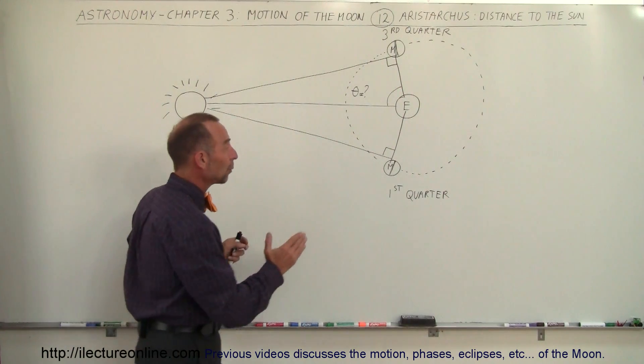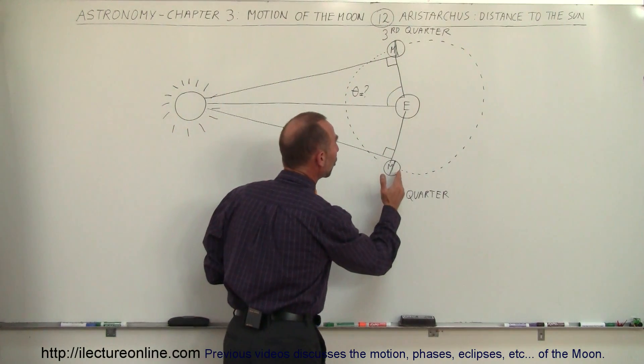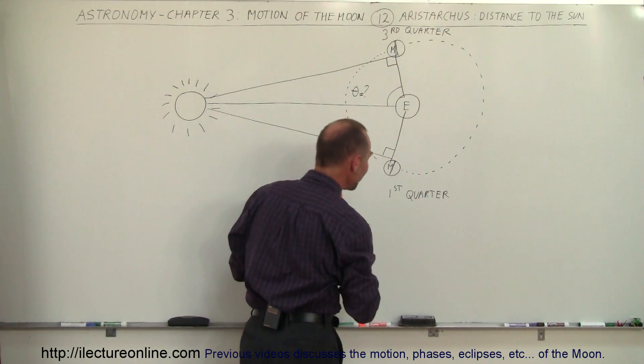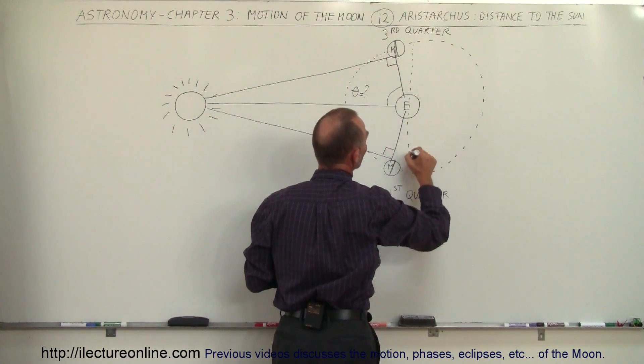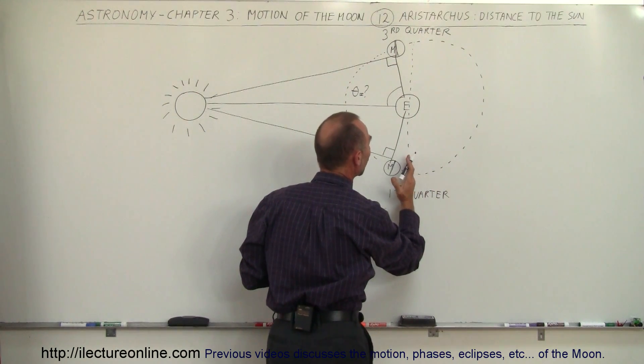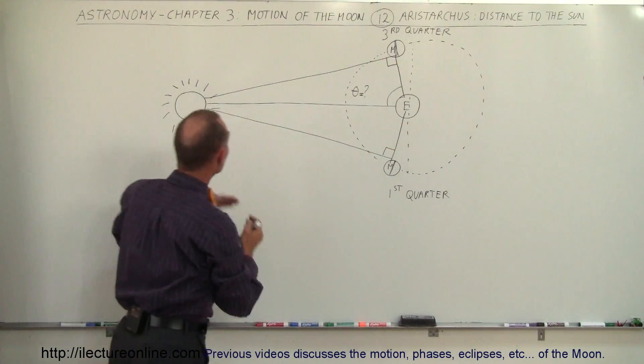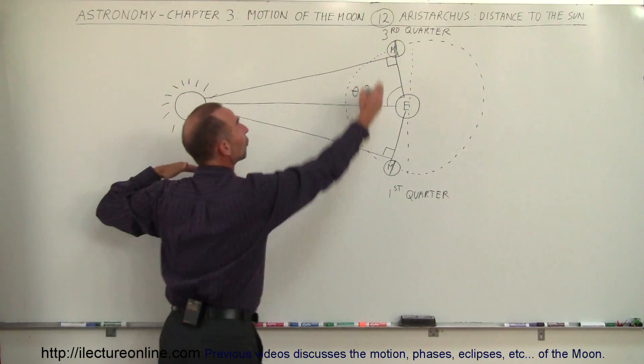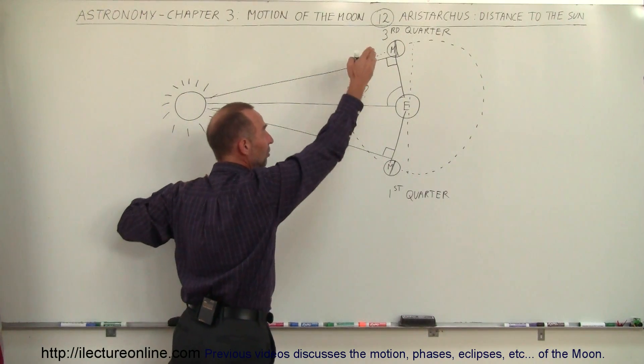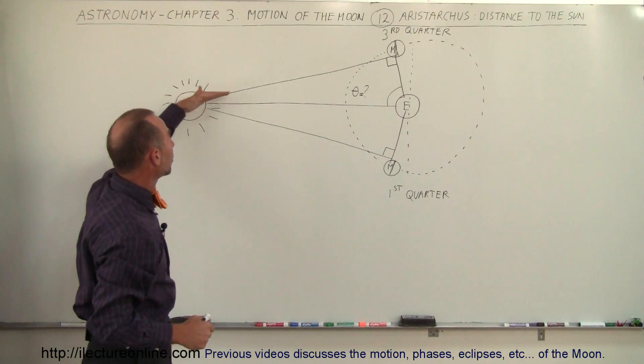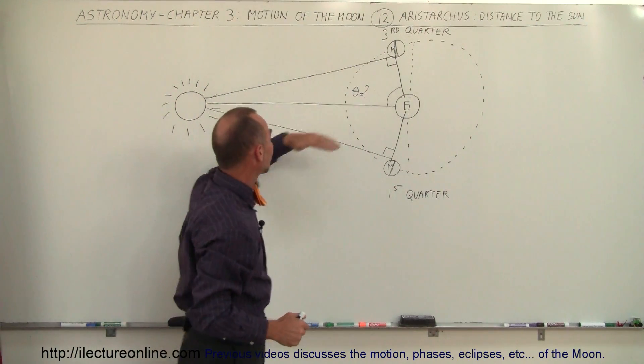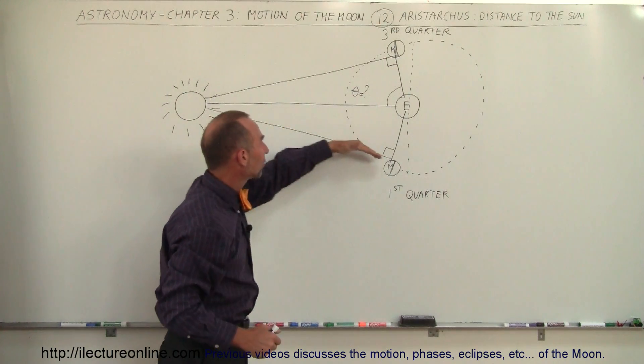He said that when the moon is at its first quarter and third quarter, it is not exactly at right angles with the sun and the earth. It's not exactly in the orbit over here and the orbit over there. Because he figured that the moon would be so far away from the earth in that direction that the sunlight would shine on the moon at this angle in this direction and at this angle in this direction.